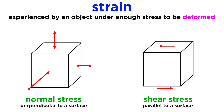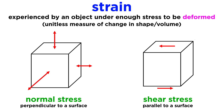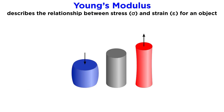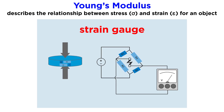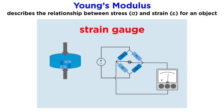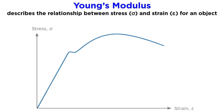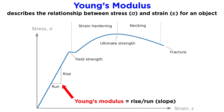If an object experiences sufficient stress to cause deformation — whether it is stretched, squashed, or sheared — it undergoes strain. Strain is a unitless measure of the change in shape or volume of an object. The relationship between stress and strain, or how a material responds to stress, is represented by a value called Young's modulus. Young's modulus is dependent on the physical properties of a material, and is determined in the laboratory by subjecting it to a series of different pressures and measuring the accompanying strain. These values are recorded and used to create a graph for the material's stress-strain relationship. The slope of the best-fitting line through the data is the material's Young's modulus.